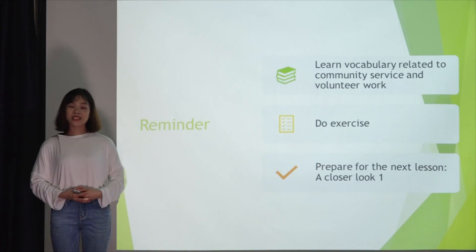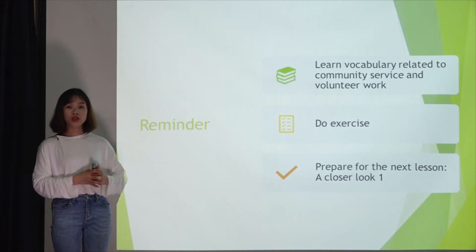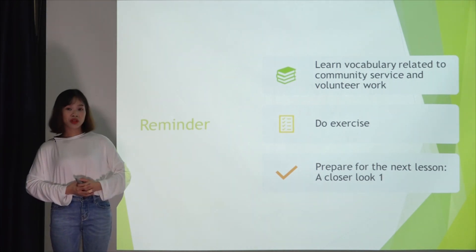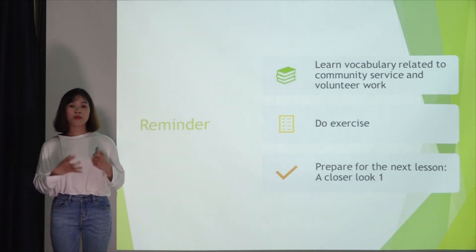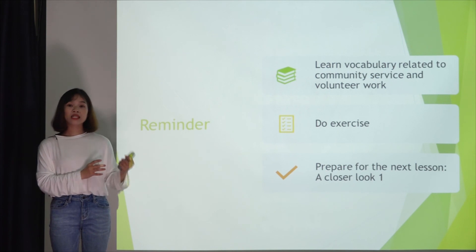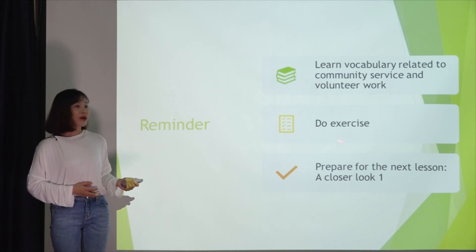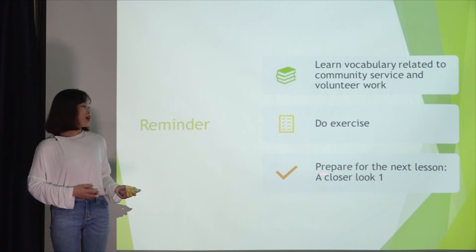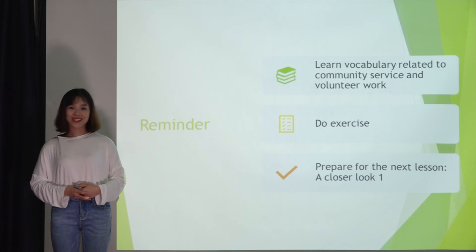So we've completed lesson 1 of unit 3 - community service. I've guided you on how to read and use vocabulary related to the topic of community service and volunteer activities. At home, study these words thoroughly and practice using them accurately. You can do additional exercises on IC Books to remember the vocabulary longer. Don't forget to prepare for the next lesson: A Closer Look One. Good luck with your studies!